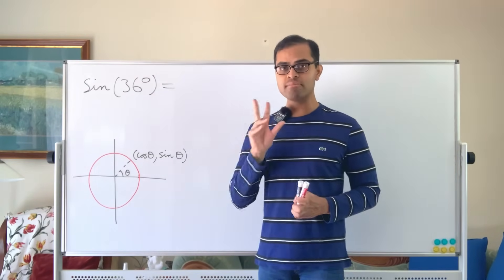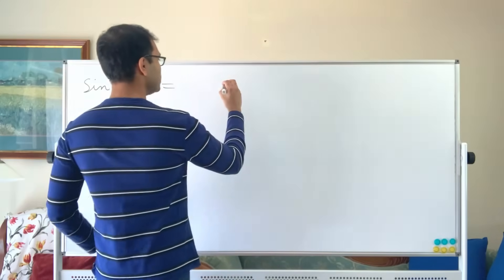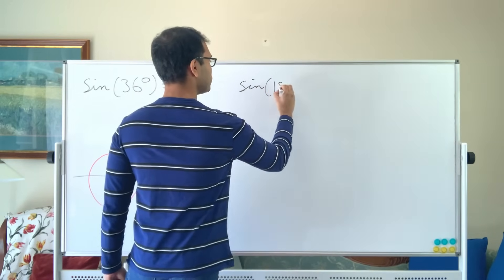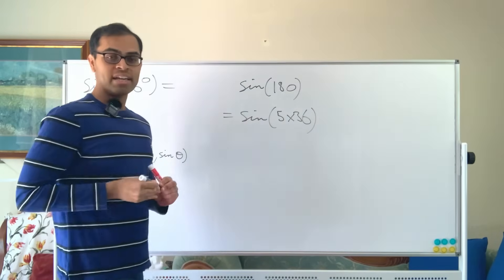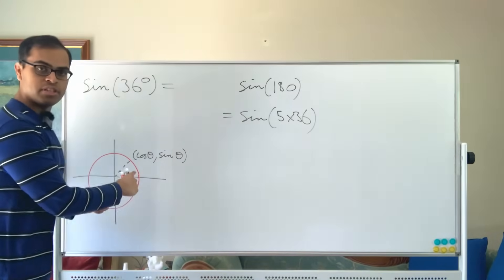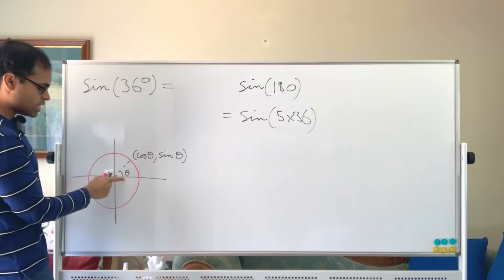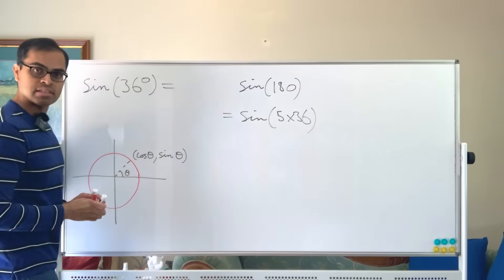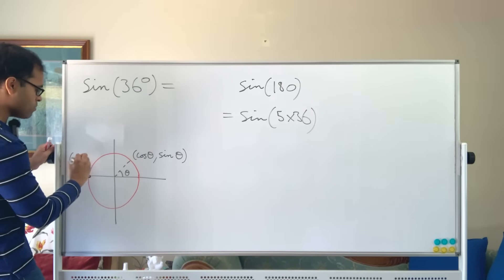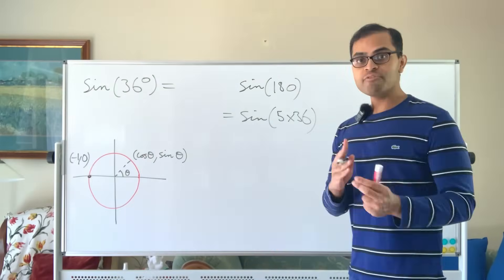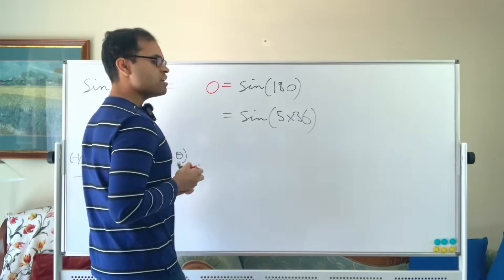We're going to observe two fundamental tricks. Trick number one is that 36 is special because 5 times 36 is 180. So sine of 180 equals sine of 5 times 36. Sine of 180 is 0, because from the unit circle definition, the point at 180 degrees has y-coordinate 0. So sine of 180 is 0, which equals sine of 5 times 36.